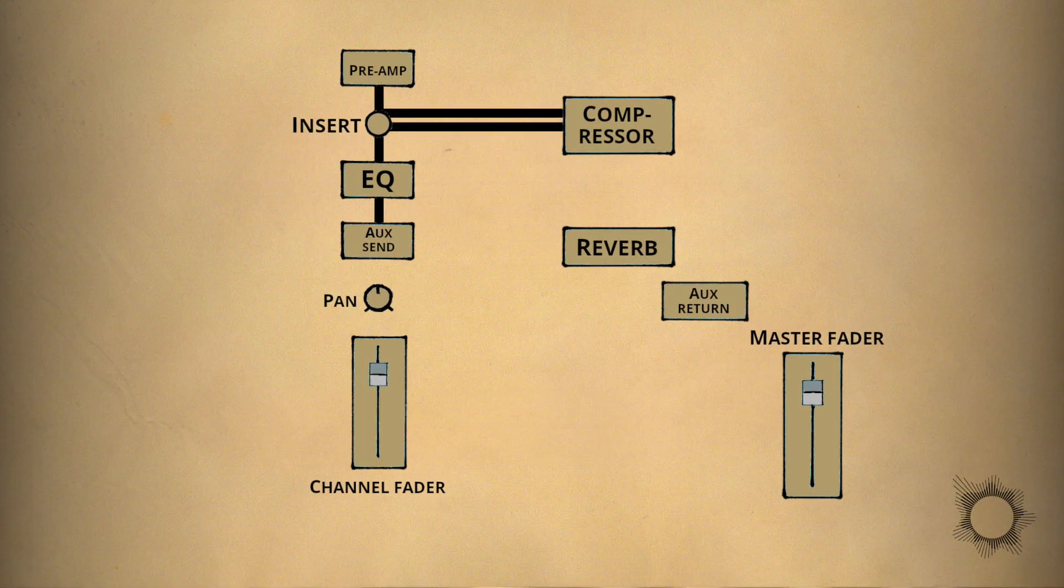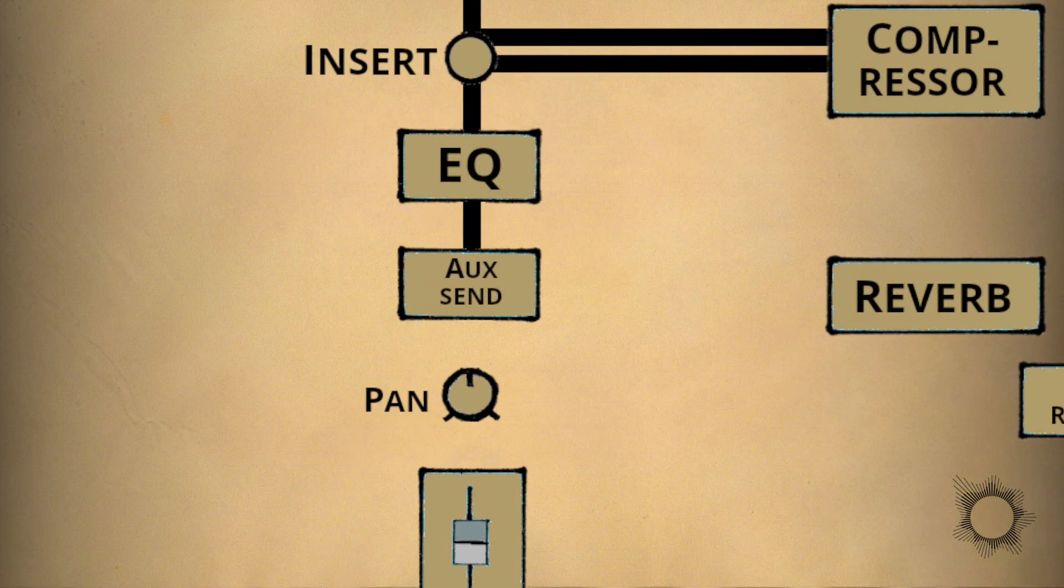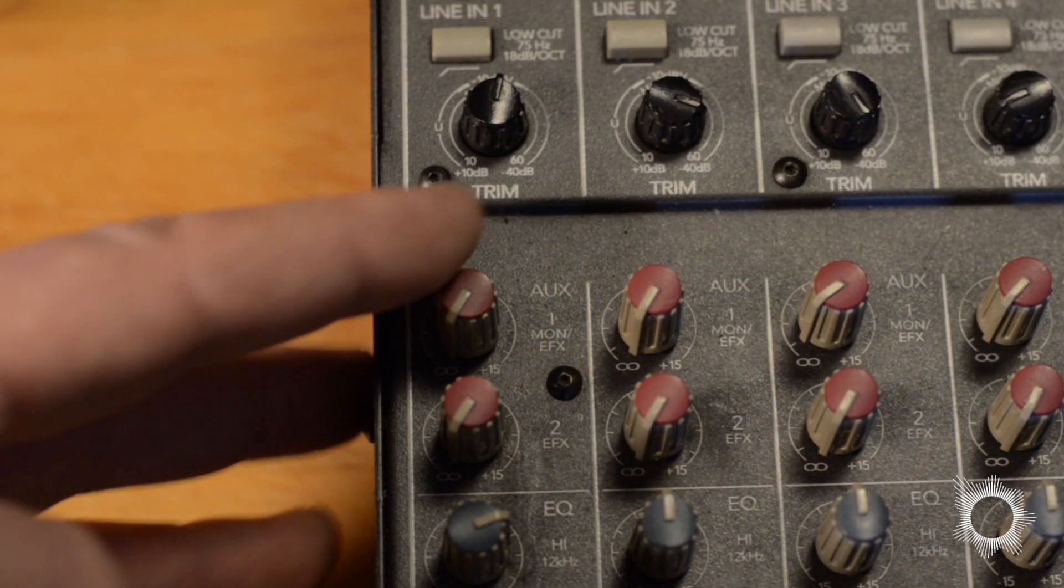After the EQ are the auxiliary sends, typically used for reverbs and such. Auxiliary simply means external. The difference between an aux send and an insert is that it doesn't cut off the signal but takes some of it and sends it to a processor, the amount of which is controlled by the send knob.